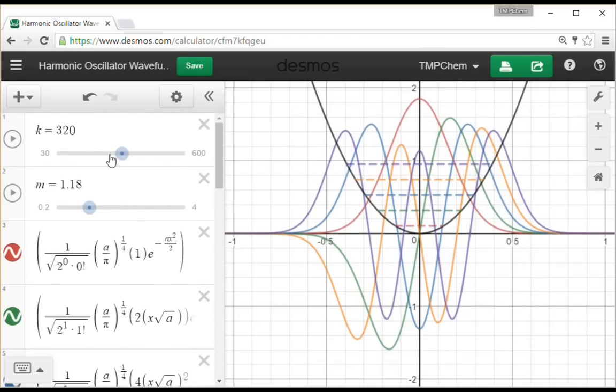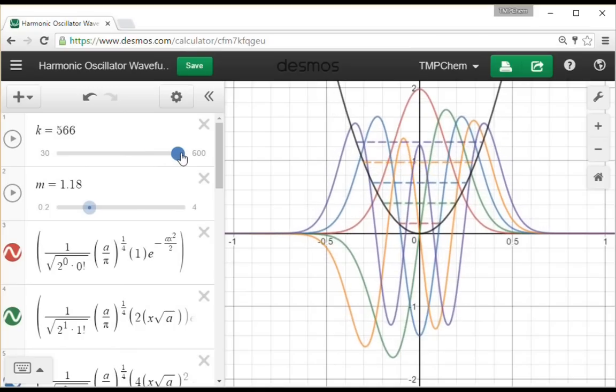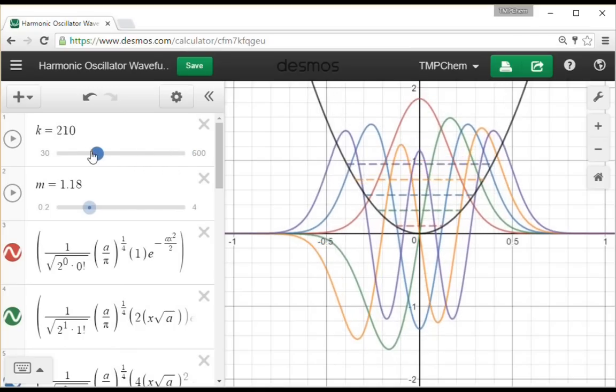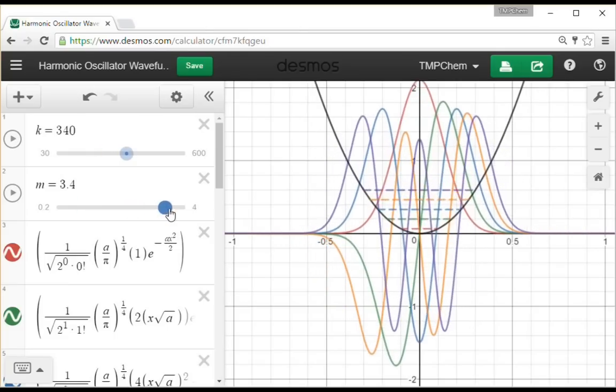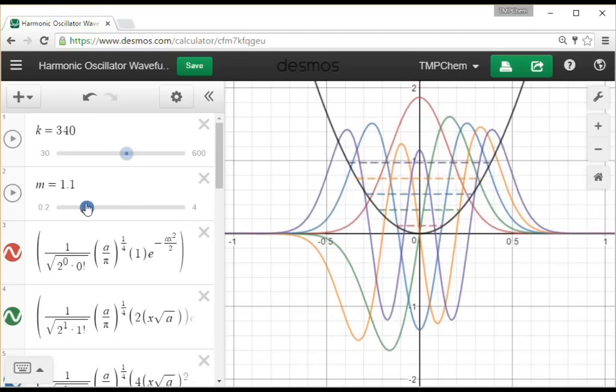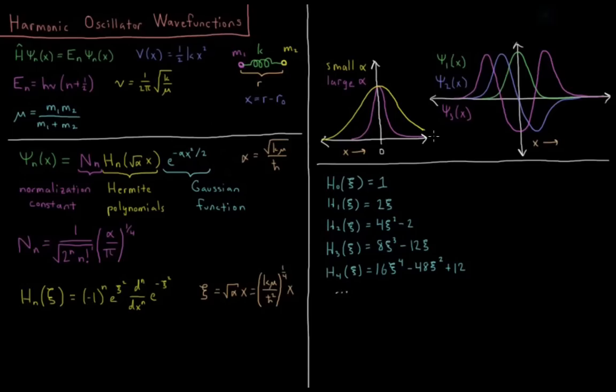So you see all these trends as how they can get more contracted or more diffuse depending on the value of k, and also depending on the m, both of which contribute to that alpha in there. And then we have the three parts that come into play, the normalization constant, the Hermite polynomial, determining the number of lobes you see, and the Gaussian, which is our central behavior of being oriented towards the origin where x equals zero.